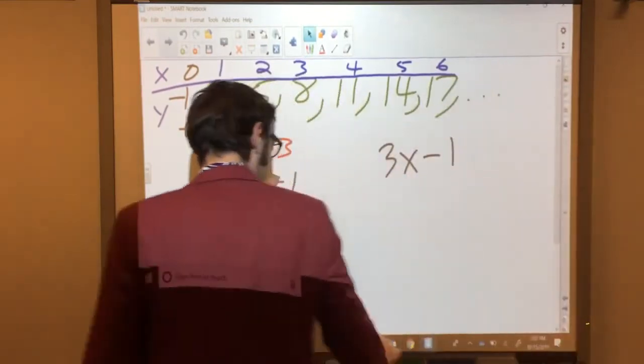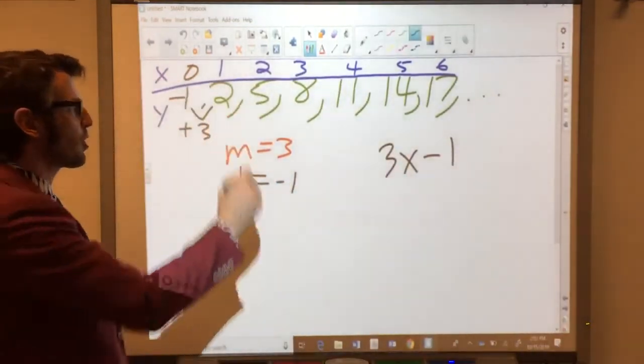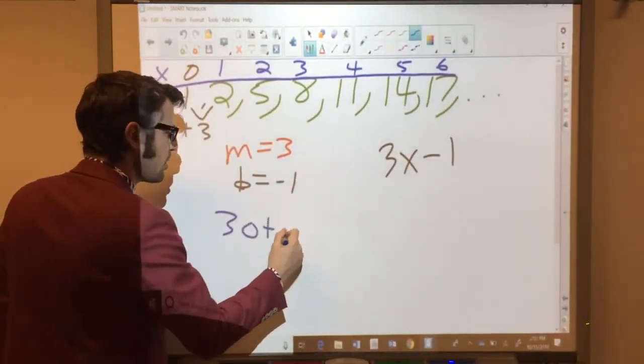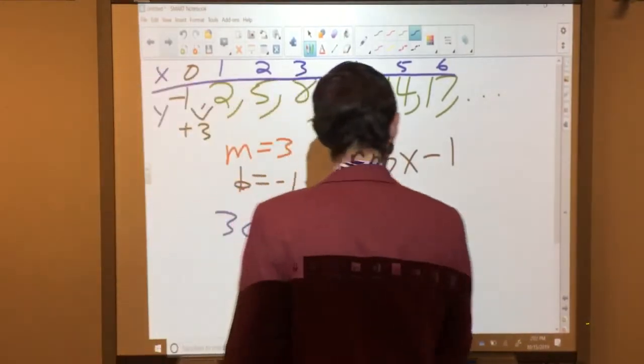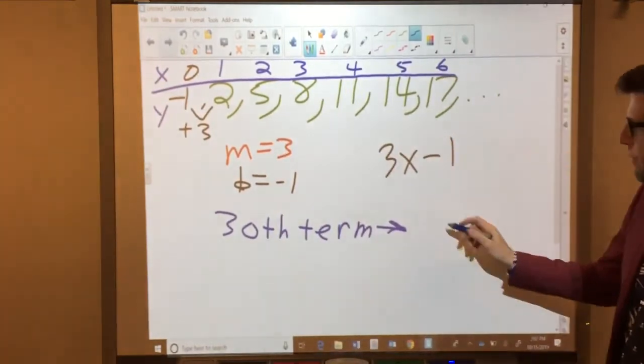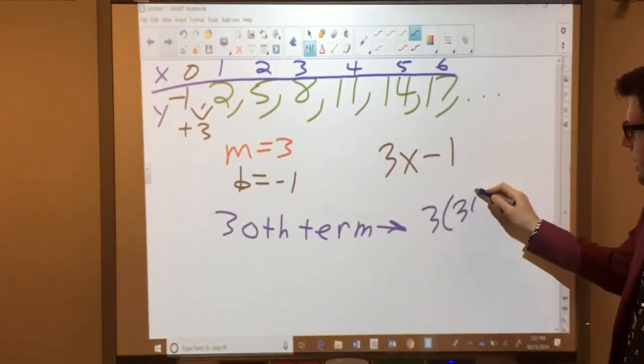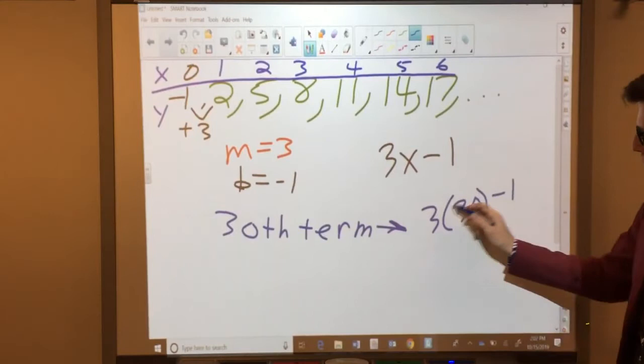So if you were asked, what's the 30th term in this sequence? The 30th term would be found by taking 3 times 30 minus 1.